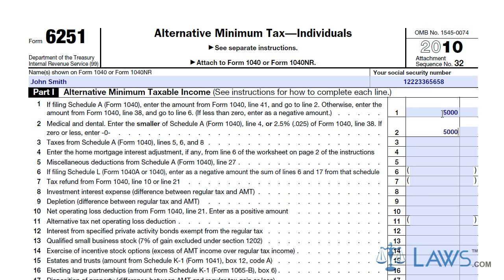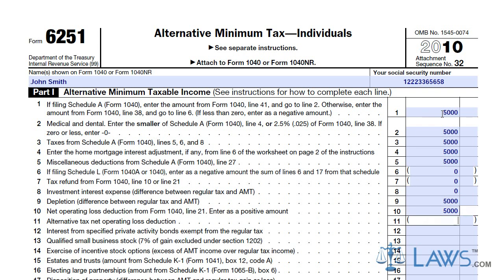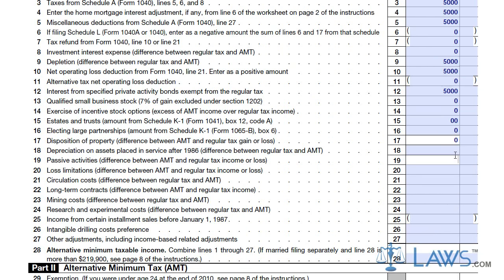Continue to enter the amounts taken from your 1040 on the appropriate lines if they are applicable. Leave blank any lines that do not apply to you. Enter medical and dental amounts, home mortgage interest amounts, deductions, investment interest, net operating loss, qualified small business stock, long term contracts, or any other amounts that apply to Part 1.